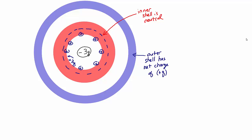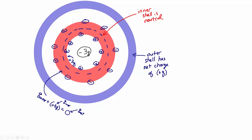Now we find the charge on the outside surface of that inner shell. We know the inner metal shell is neutral, so if there was plus 3q on the inside, the outer surface plus the inner surface has to equal the net charge on the shell. The outer surface plus positive 3q equals zero, because the inner shell is neutral. So the charge on the outside surface of the inner shell had to be negative 3q. Positive 3q on the inside surface and negative 3q on the outside surface add together to equal zero — the net charge on that inner shell.